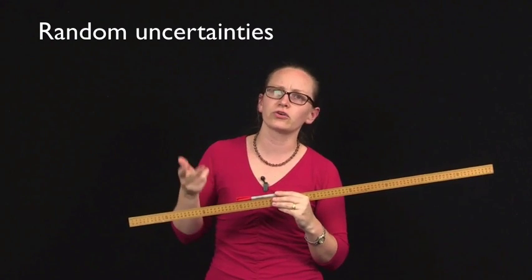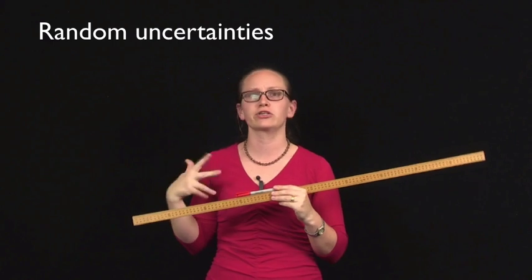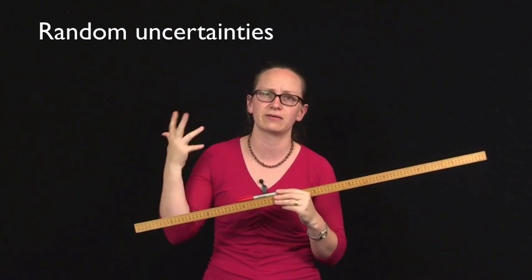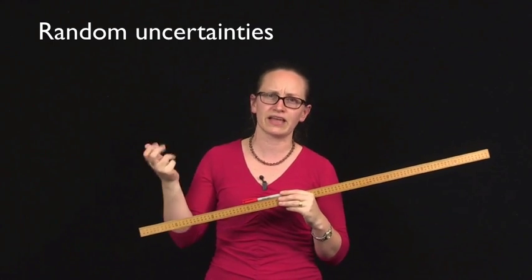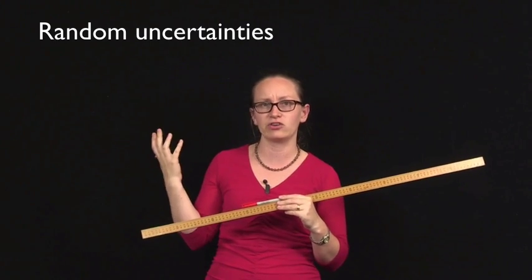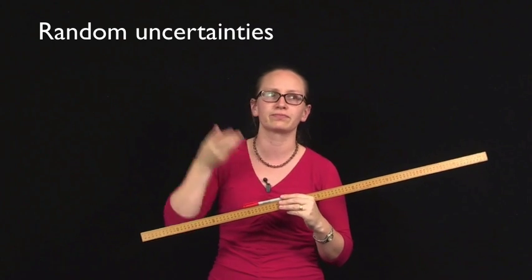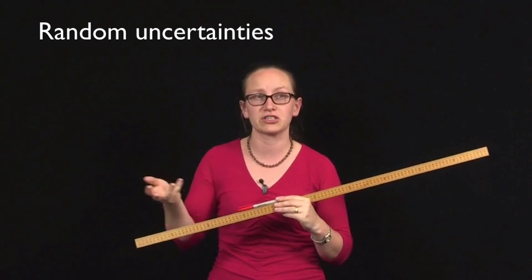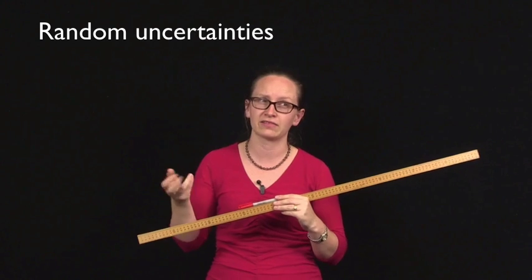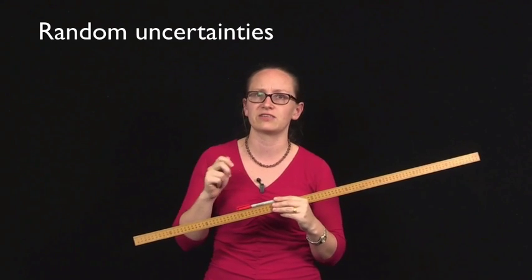Random errors can also come about due to random fluctuations in the values that we're measuring. So for example, if you were measuring the background radiation, this varies and so you've got random noise or random uncertainties associated with that. So random uncertainties have a zero mean.